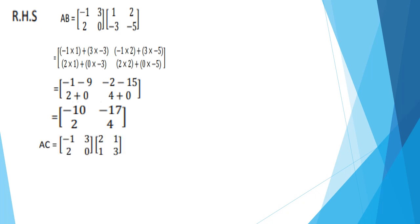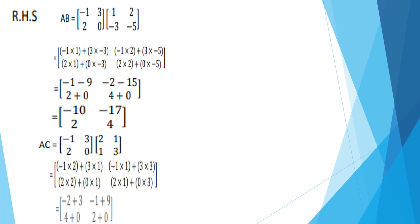Now find AC because in the last step you have to subtract AB minus AC. First multiply AC. This is matrix A and this is matrix C. Multiply the same way: first row with first column, first row with second column, second row with first column, second row with second column. You will get the intermediate values. Adding the numbers: 2 plus 3, minus 2 plus 3, minus 1 plus 9, 4 plus 0, 2 plus 0. You will get the answer: 1, 8, 4, and 2 — this is matrix AC. In the last, subtract AB minus AC.